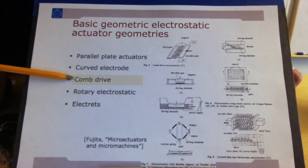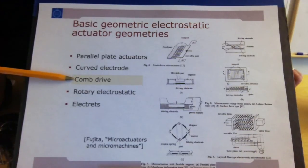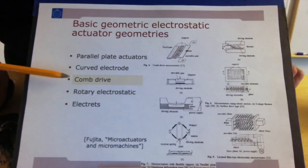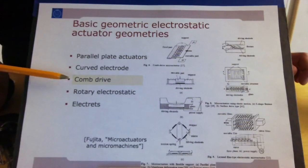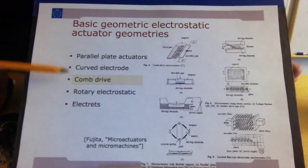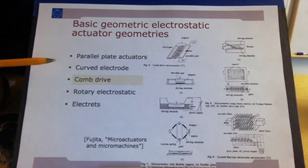The accelerometers and gyroscopes built into your mobile phone today — the ones that measure your position and rotation — almost 100% of them are built using comb drive actuators.